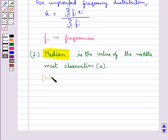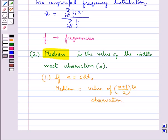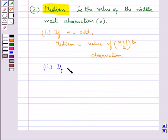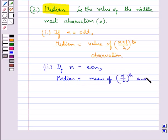Now, if the total number of observations, that is n, is odd, then the median in this case is the value of (n+1)/2 th observation. And if the total number of observations, that is n, is even, then the median is the mean of n/2 th and (n/2 + 1) th observations.